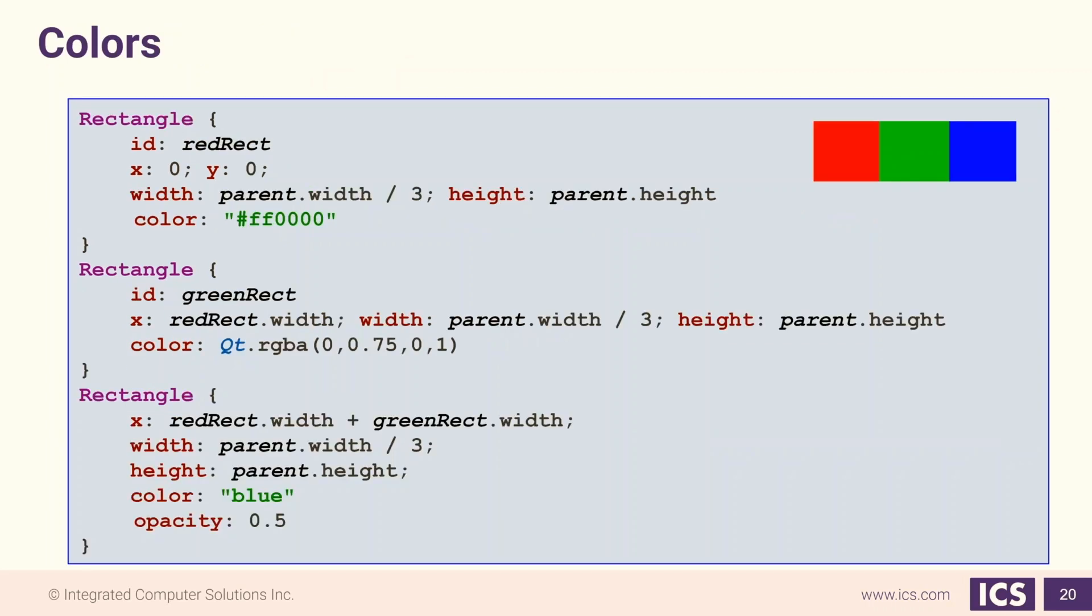Here we're setting the color for each one of these rectangles. We're able to set the color property in one of three different ways. We can use HTML color notation. This is done by making a string that starts with the pound symbol and then our HTML color. This is how we've set the color for our first rectangle to red.